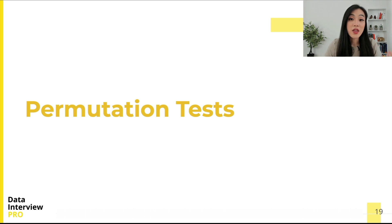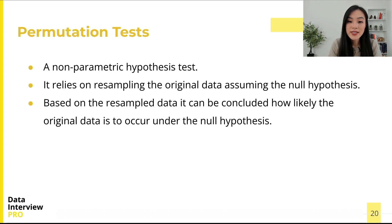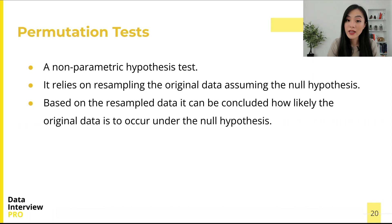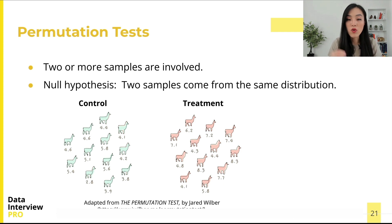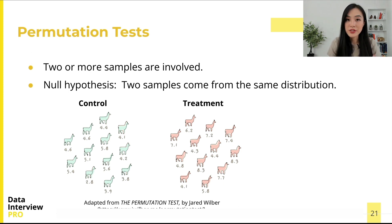The other resampling method is the permutation test — a non-parametric hypothesis test. It relies on resampling the original data assuming the null hypothesis. Based on the resampled data, we can determine how likely the original data is to occur under the null hypothesis. In a permutation test, two or more samples are involved. In the two-sample case, let's say we have two groups: control and treatment. The null hypothesis is that the two samples come from the same distribution.